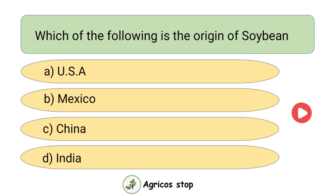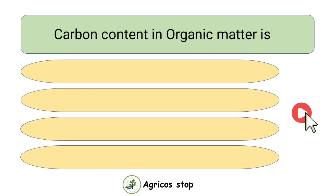Which of the following is the origin of Soybean? Options are USA, Mexico, China, and India. The answer is China. China is the origin of Soybean.